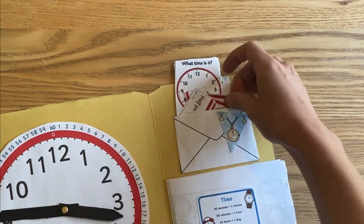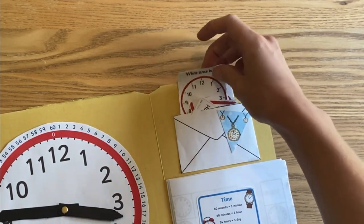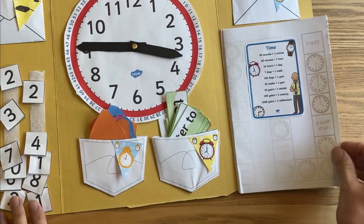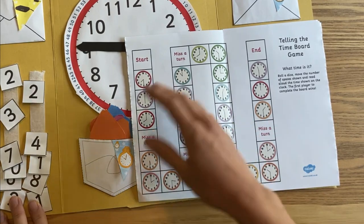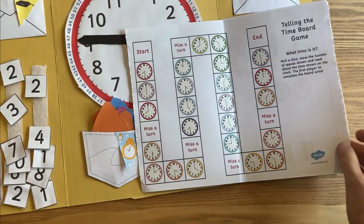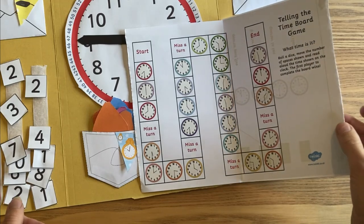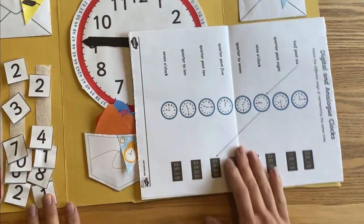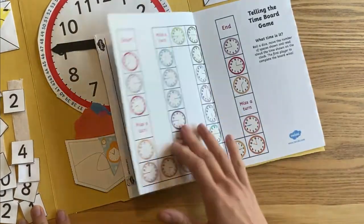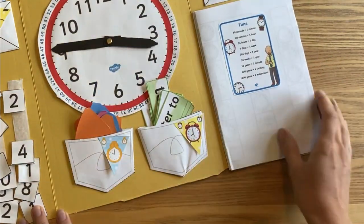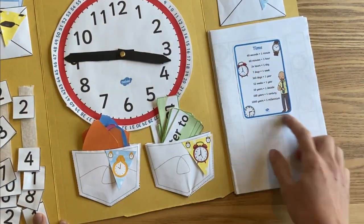We've got another game up here where we can match the clocks to the words again. Then finally down here we've got some board games as well. I wouldn't actually do all of these at the same time, but it just means we can pick something each time when we want to do a bit of practice. We've got a nice worksheet here and then another board game with different clocks on, all for telling the time and helping children practice.